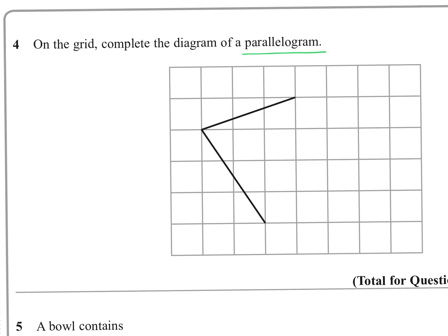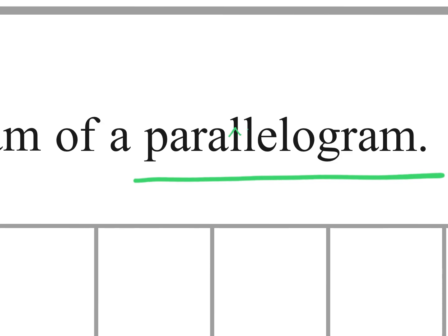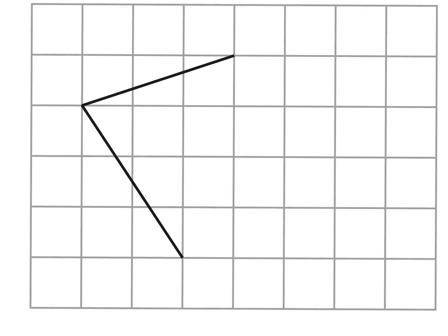Question four: on the grid, complete the diagram of a parallelogram. A parallelogram has two L's — for me those represent the parallel sides — so it has opposite pairs of parallel sides. To find a line parallel to the given one, look at how to move from one point to another: three along and one up. Start from the new point, go three along and one up, and draw the line.